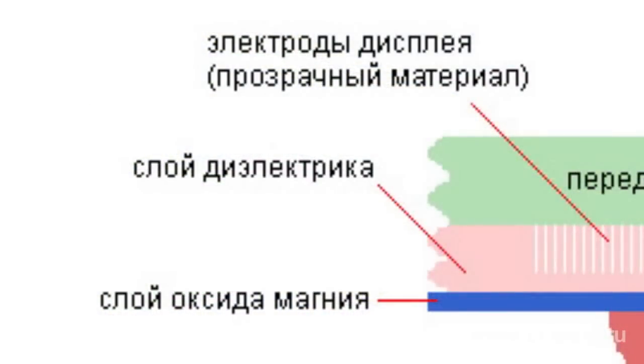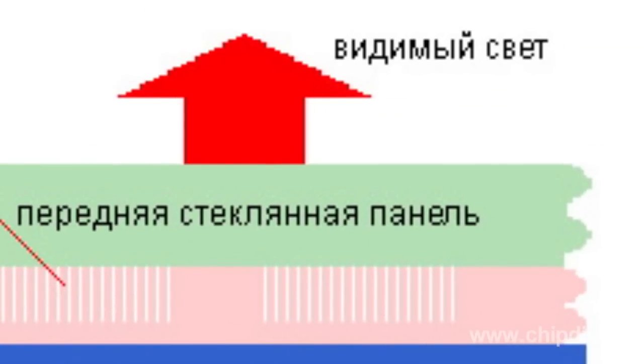The colored light passes through glass and goes to the viewers' eyes. Thus, in plasma technology pixels work like luminous tubes, but they can hardly be used to make panels.